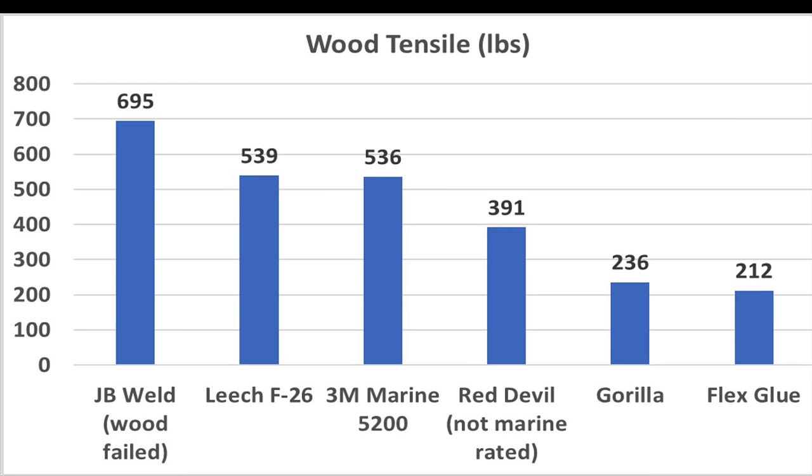For the wood tensile strength test, not surprisingly, JB Weld, a two-part system, totally crushed the competition by delivering nearly 700 pounds, but the wood failed in all three tests, preventing it from demonstrating its true potential. F-26 and 3M were in a virtual tie at nearly 540. Red Devil delivered 391, Gorilla 236, and Flex 212.